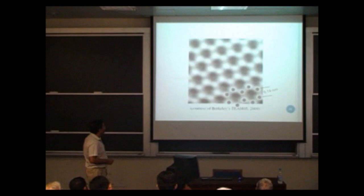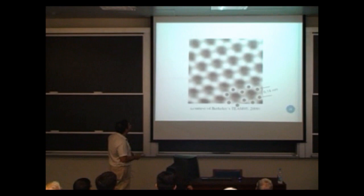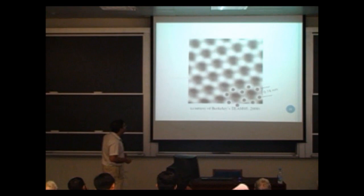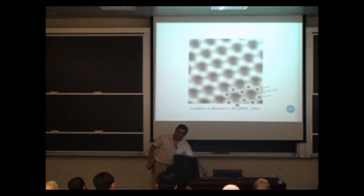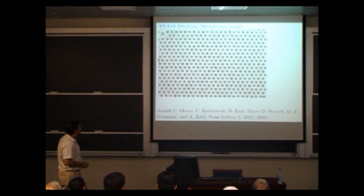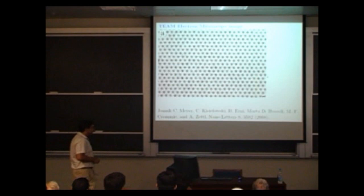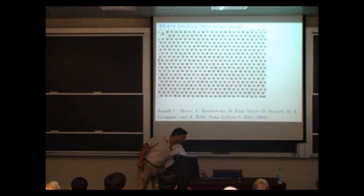This is a transmission electron micrograph from the Berkeley group — you can still see the hexagonal structure. The nearest neighbor distance of carbon atoms is 0.14 nanometers. When it comes out right, it is a beautiful picture worth a thousand words. This electron microscope image from the Berkeley group published in Nano Letters shows the hexagonal lattice, which is very important.